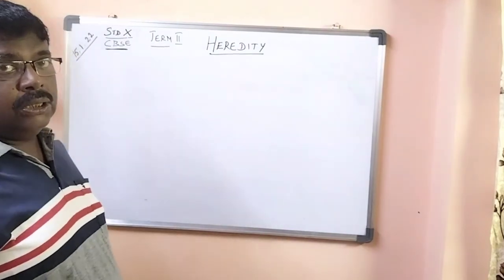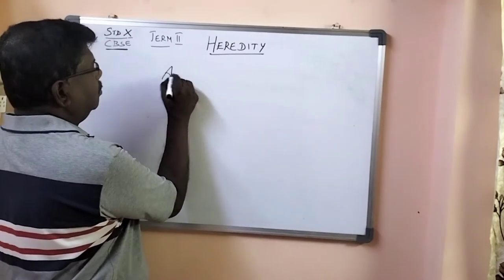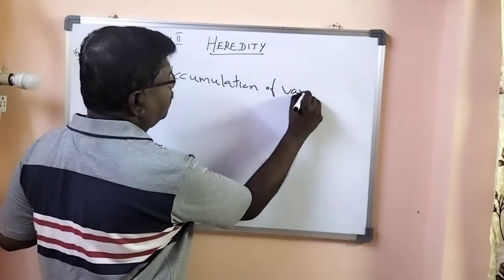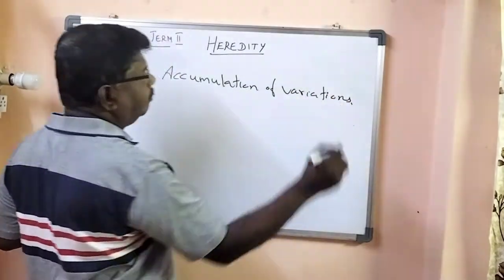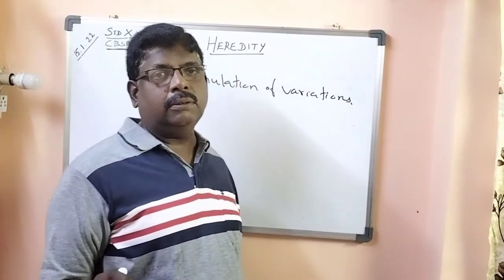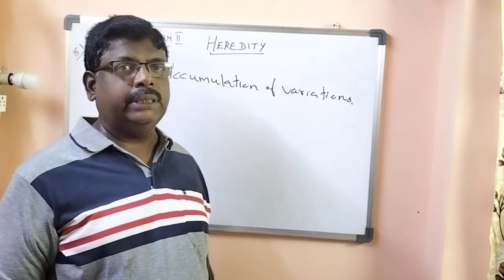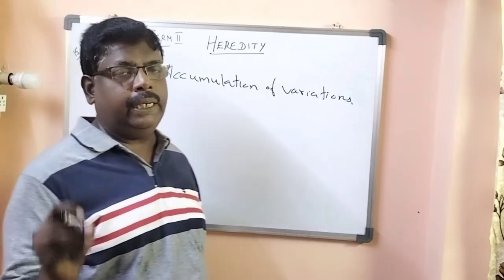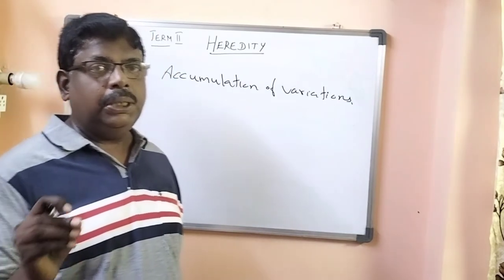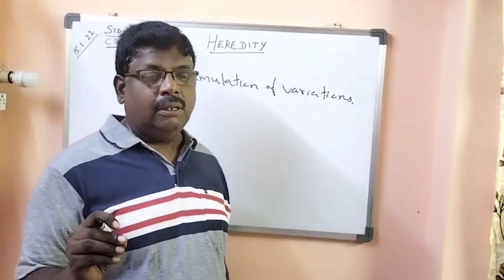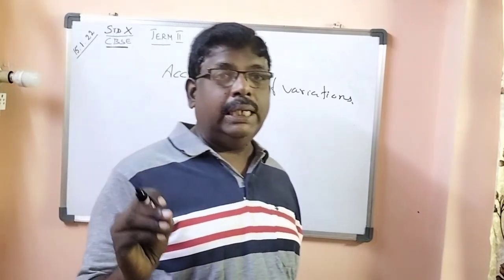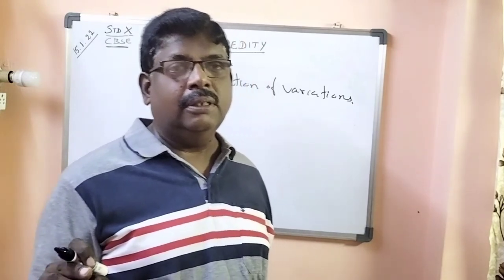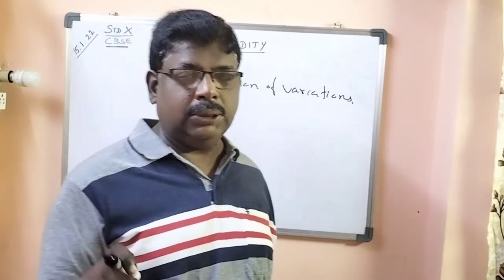Next, we move on to accumulation of variations. During reproduction, organisms undergo cell division, and at that time there is copying of DNA. This will lead to variations. These variations are possible only in case of sexual reproduction, not in asexual reproduction. More variations occur only in sexual reproduction.